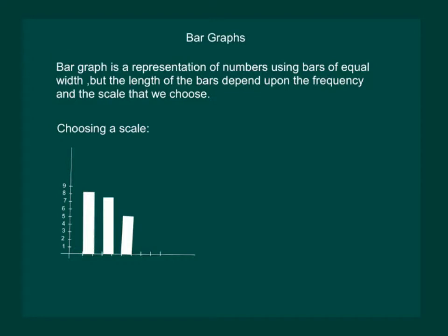For example, in this graph width of each bar is equal but the length is variant, which is dependent on the frequency that will be based on the data given and the scale that we have chosen is dependent on the data and the fact that each unit is representing one observation.